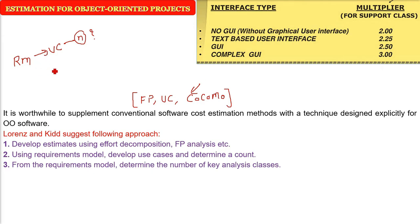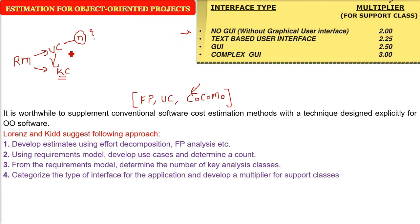From the requirement model and use cases, we determine the number of key analysis classes. There are key classes and supporting classes. You must categorize these key classes by interface type: no GUI (without graphical user interface), text-based user interface, GUI, or complex GUI.